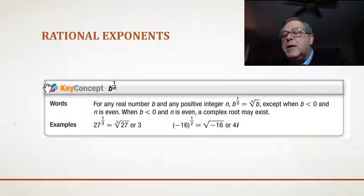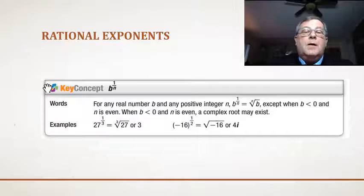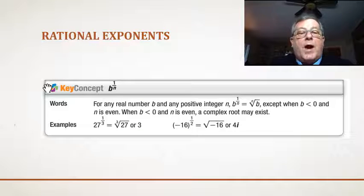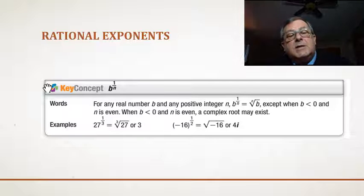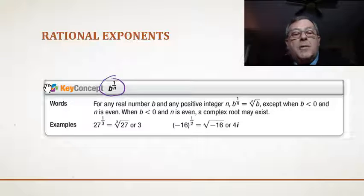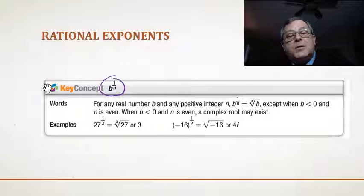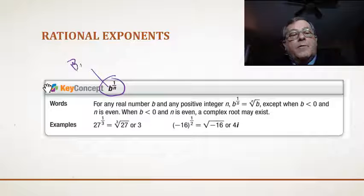Now, rational is just a fancy word for a fraction or a fractional exponent, a rational exponent. And here we see key concept, b raised to the power of 1 over n. In this case, b is our base, and 1 over n is our exponent.